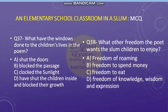Question number 38: What freedom does the poet want the slum children to enjoy? Options: A — freedom of roaming here and there, B — freedom to spend money, C — freedom to eat, and D — freedom of knowledge, wisdom, freedom, and expression. Now we are going to the last two questions, 39 and 40.